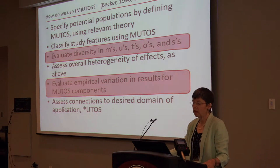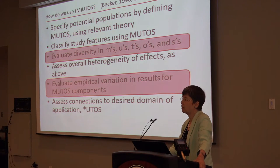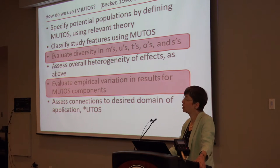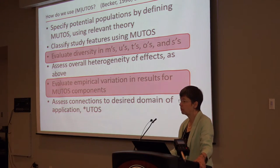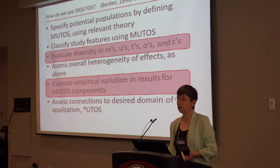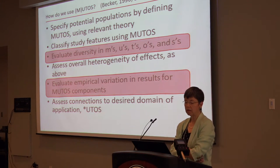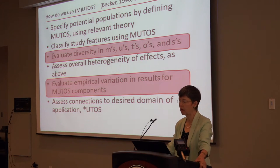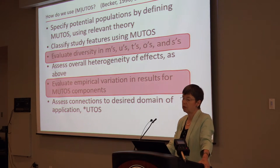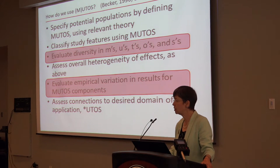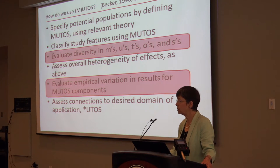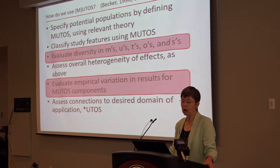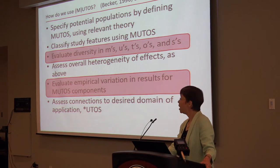So what do we do with MUTOS? The first thing we do is use theory in any way we can to specify our populations of interest, then classify the studies that we find — which also helps us define inclusion rules for meta-analysis. Then we do coding, classifying study features according to whether they represent M's, U's, T's, or O's. There might be different features of subject populations, different aspects of measures used under O — like how long the tests are, the format, whether it's self-report — and we evaluate diversity in each one.